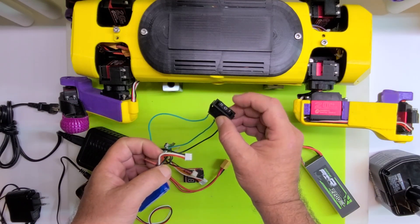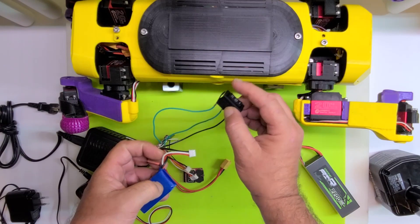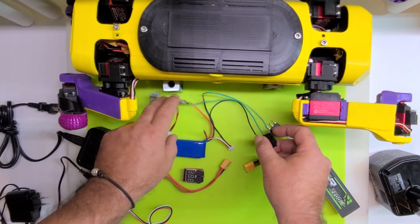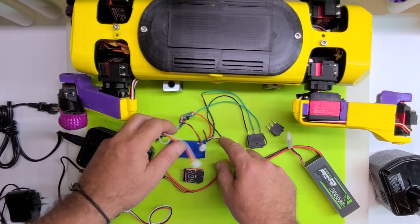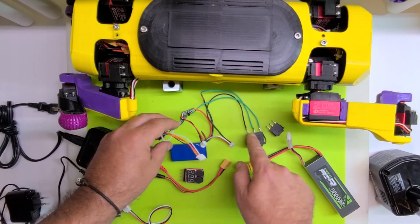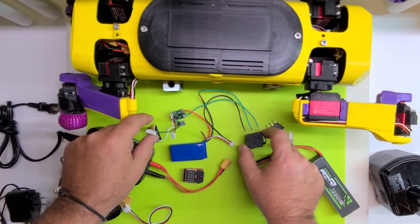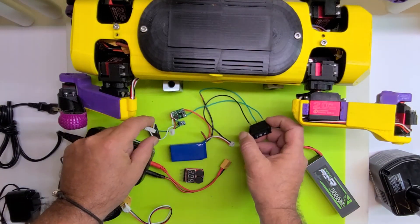So what that is, is off in the middle position and it's double throw because it can control two devices. Pushing it one way it gives power to one, pushing it the other way gives power to the other. So that's what I've wired up here.